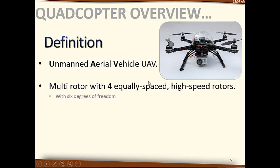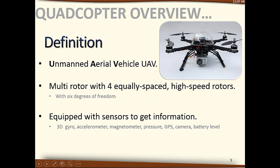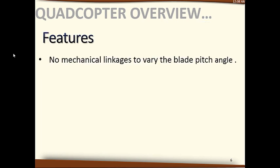A quadcopter is an unmanned aerial vehicle, despite the emergence of some quadcopters where a person has ridden them. They have four equally spaced rotors for producing thrust or lifting force. They are also equipped with sensors — including a gyroscope, accelerometer, magnetometer, and others — responsible for giving information about the quadcopter's conditions and surrounding environment. They are typically controlled by a radio remote controller from the ground station.